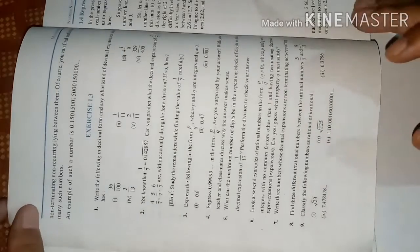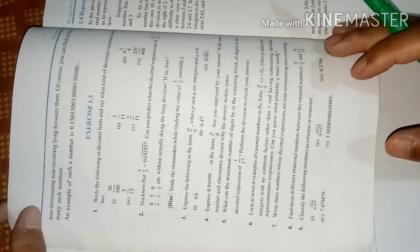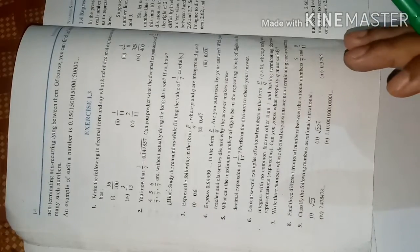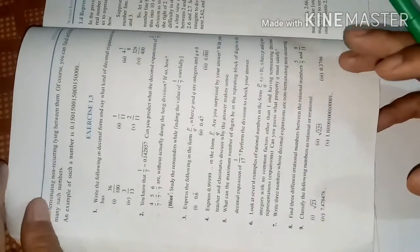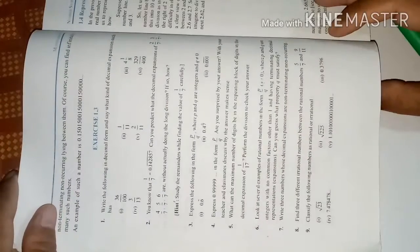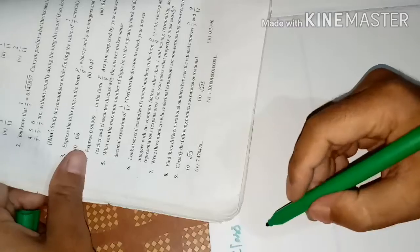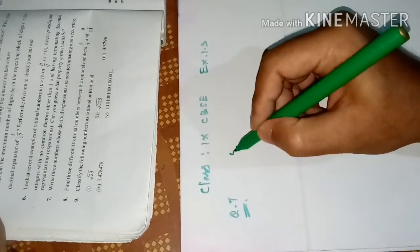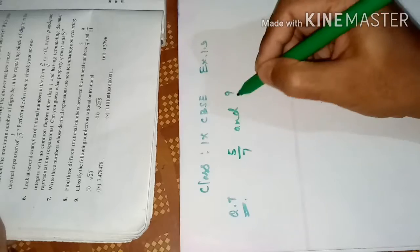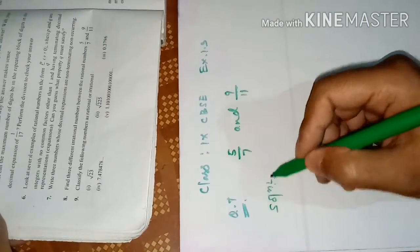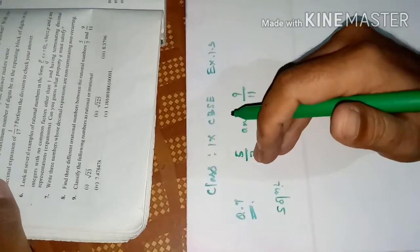As we already know, between any two rational numbers there are unlimited numbers — those numbers may be rational or irrational. So the question is asking that between 5/7 and 9/11 we have to find three irrational numbers. First of all, we are going to convert 5/7 into decimal form.